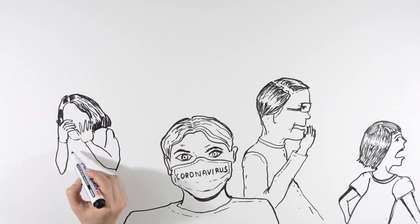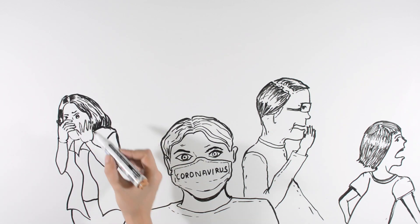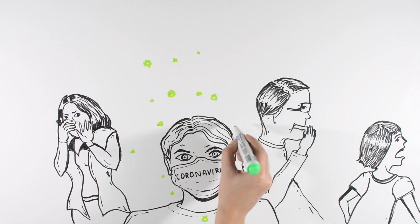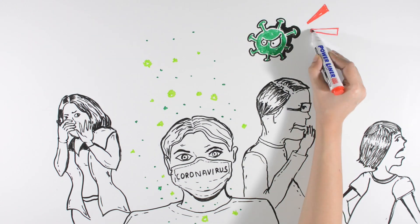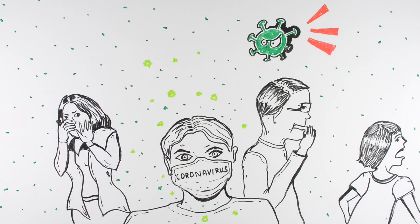The symptoms of coronaviruses are similar to any other upper respiratory infection like runny nose, coughing, sore throat, and fever. Its symptoms range from mild to severe. When the case is mild, there could be fever, shortness of breath, or cough, but if the situation gets worse, it can lead to pneumonia, kidney failure, and even death.